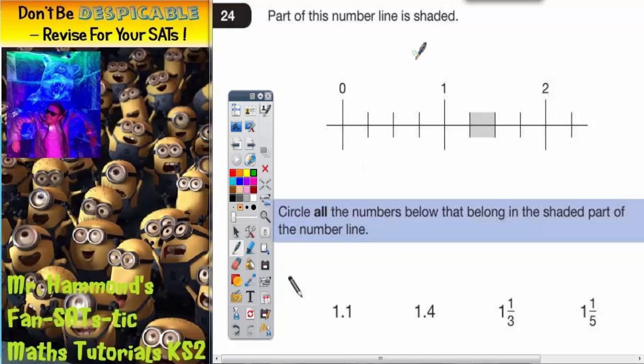Question 24. Part of this number line is shaded. It goes 0, 1, 2. Circle all the numbers below that belong in the shaded part of the number line.